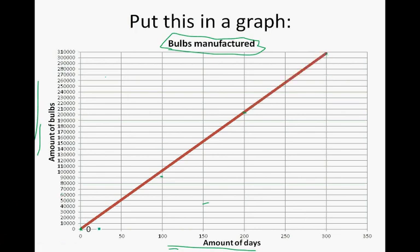And now, with this graph, we are able to see where the manufacturer should be at certain days. So at about 50 days, they should have manufactured more or less 50,000 bulbs. At 150 days, the manufacturer should be at, let's say, 155,000 light bulbs. So we can, after we have drawn the graph, use the graph to read different bits of information to see whether this manufacturer is on track.